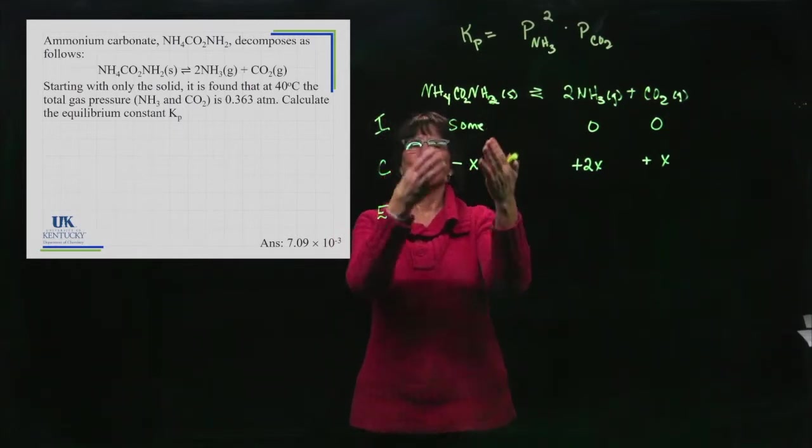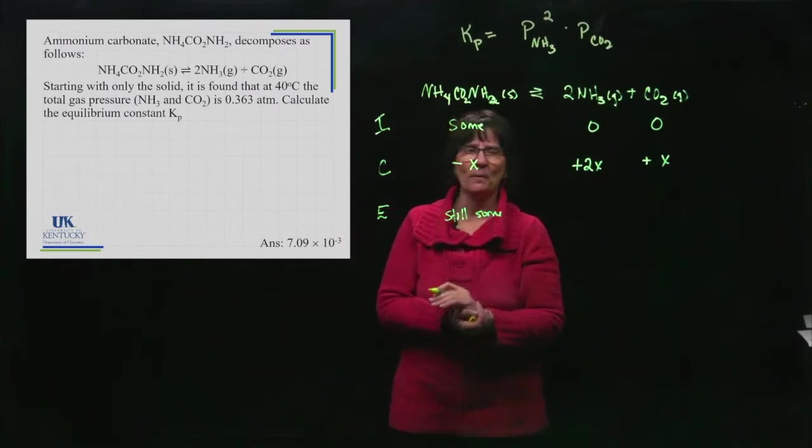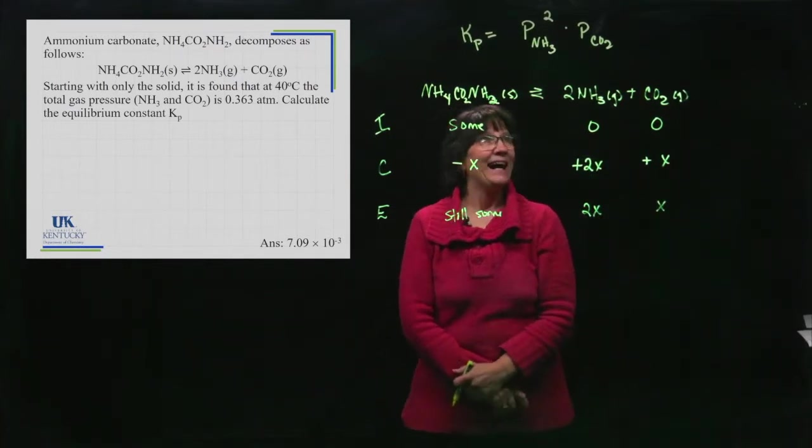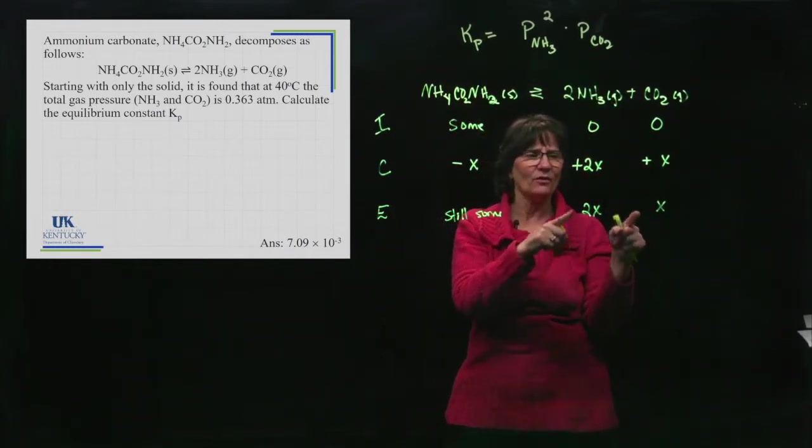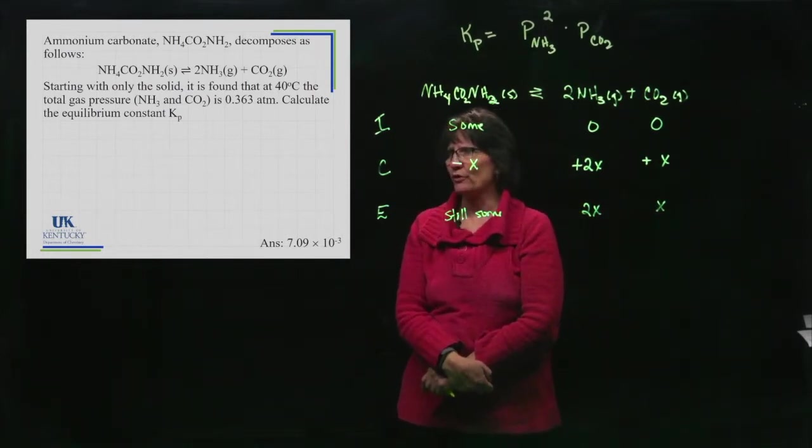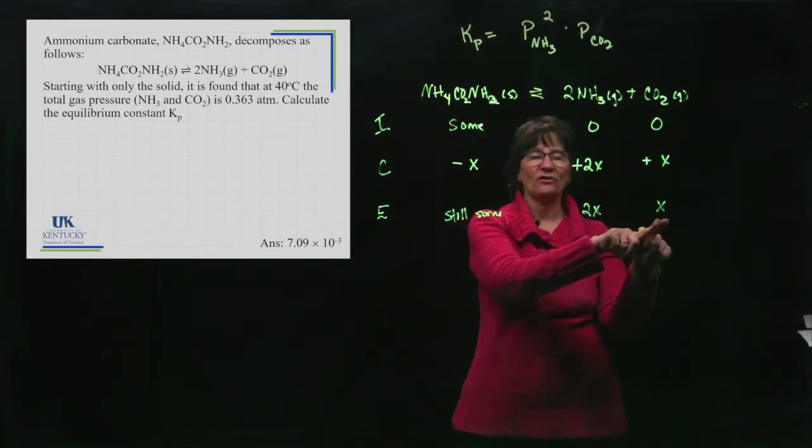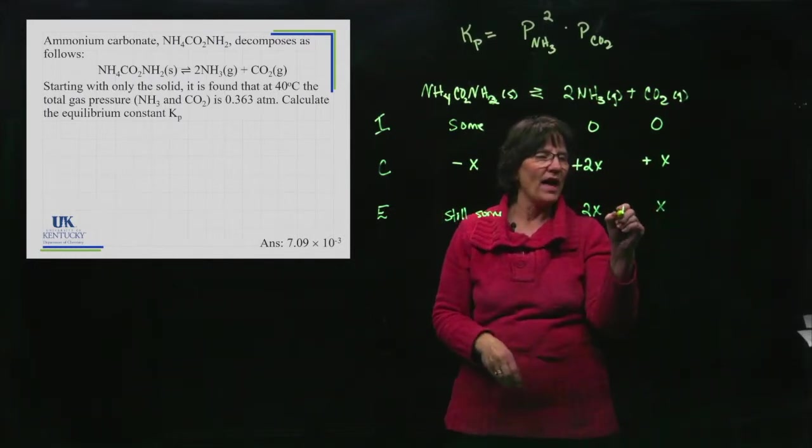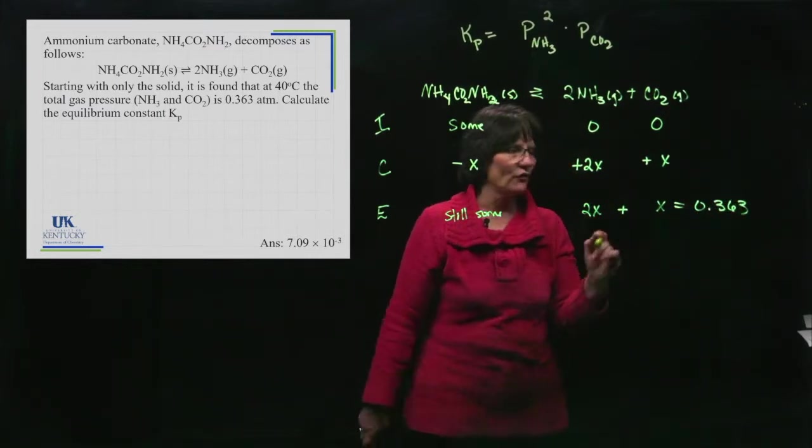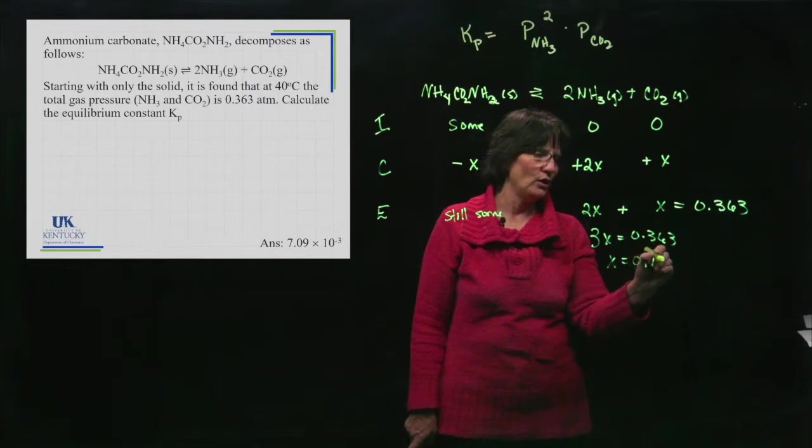So what do I have here? Well, there was some and I subtracted the sum of it away. So there's still some. It's not in my expression. So I don't care about it. But I do know that I've made some of this 2x, 0 plus 2x. And I have x of this. I still can't plug those in because these aren't pressures yet. These are variables with x's in them. But there's something else they tell me. The total pressure adds up to 0.363. Well, this is solid. It's not contributing to a pressure. But this is a gas and this is a gas. These are the equilibrium pressures. So they add up to 0.363. So I can solve for x. 3x is 0.363. x is 0.121.